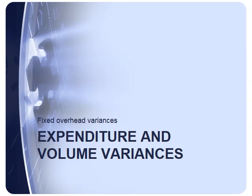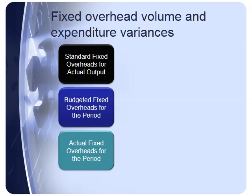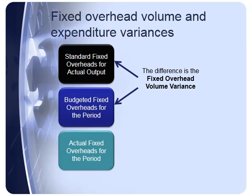Let's first look at how we calculate our expenditure and volume variances. To calculate our variances we need three different figures. First, the standard fixed overhead per unit multiplied by the actual output. Secondly, the budgeted fixed overheads for the period. And lastly, the actual fixed overheads for the period. The difference between the top two figures is the fixed overhead volume variance — the variance caused because we've produced more or less units than we actually budgeted to produce.